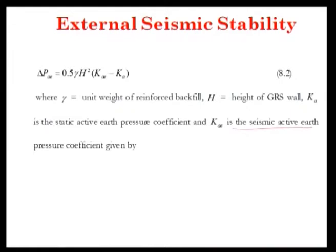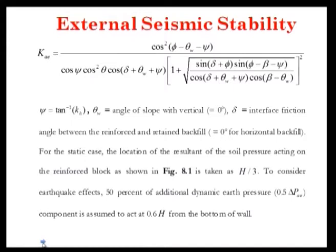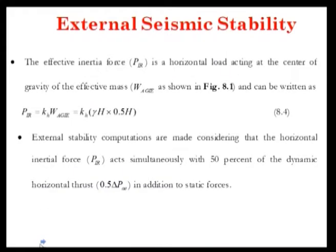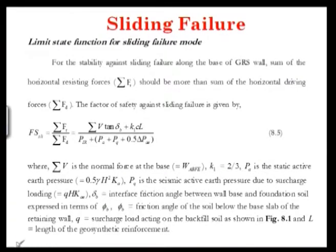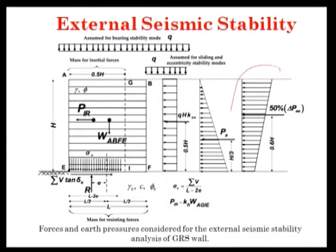After finding the seismic active earth pressure coefficient, the effective inertia force PIR can be found as Kh·W·Ag·i. Once this is obtained, the pressure distribution due to seismic force can be determined, and the resultant will act at a distance of 0.6H from the base of the wall.